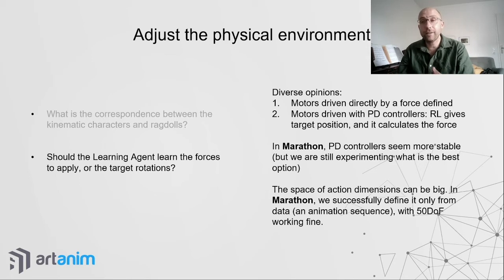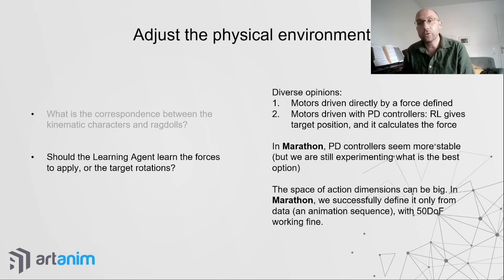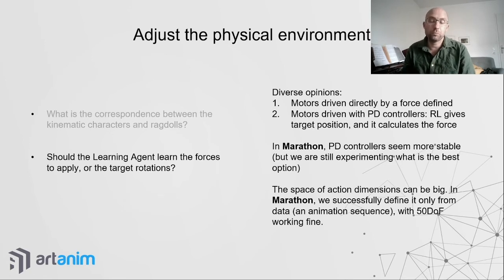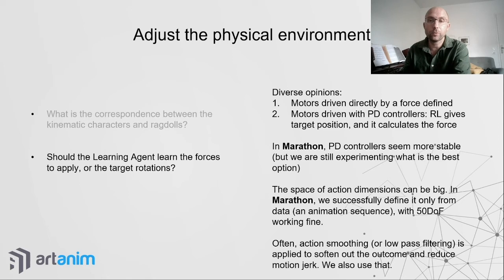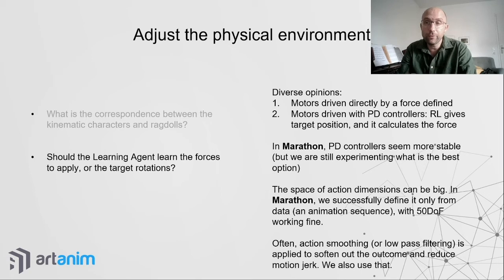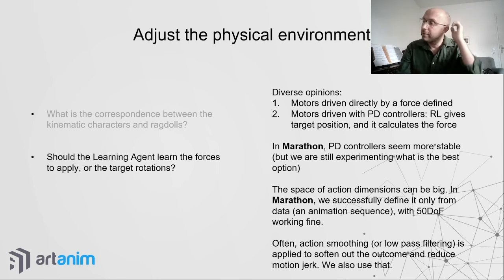In practice, the size of the action space doesn't significantly impact training speed — with 50 degrees of freedom, it works fine. Sometimes, especially when directly learning forces, you smooth or low-pass filter the applied forces to reduce jerk and improve the appearance of behavior.